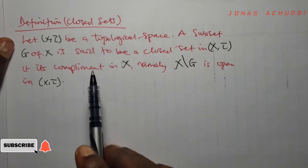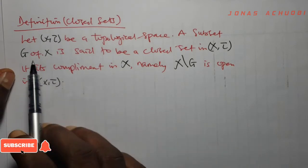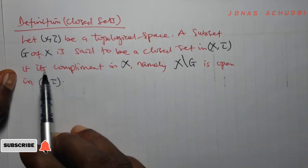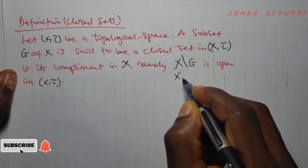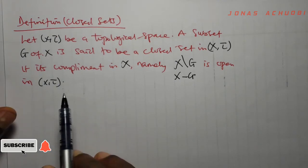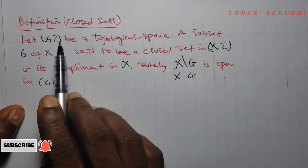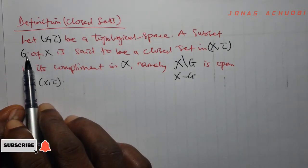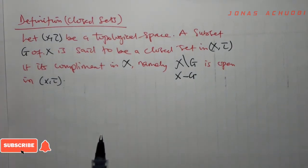Definition: closed sets. Let (X, tau) be a topological space. A subset G of X is said to be a closed set in the topological space (X, tau) if its complement in X — namely X minus G — is open in (X, tau). So we see here that G needs to be a subset of X and not in the topology tau. In other words, a set G is closed if its complement is open in (X, tau).